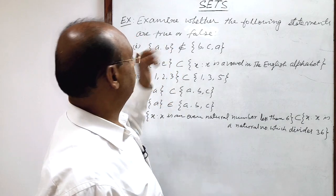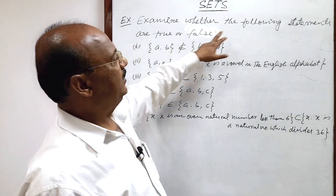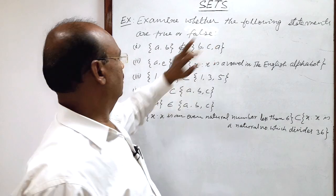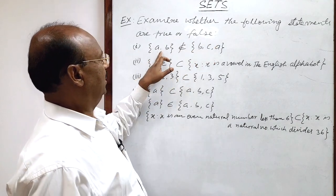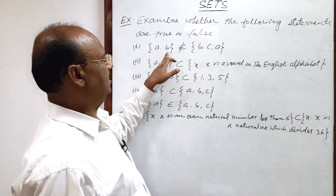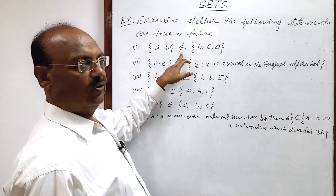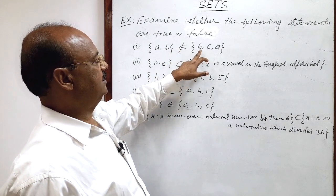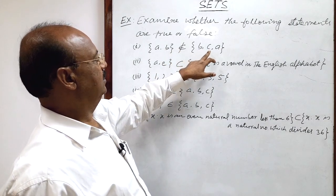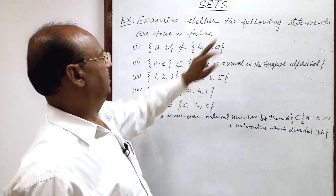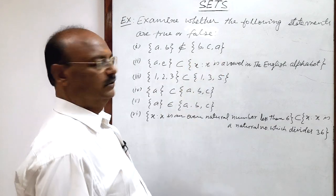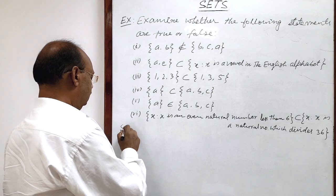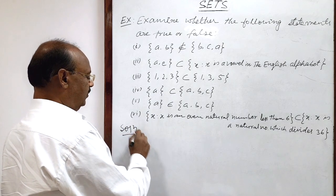So here the question is: examine whether the following statements are true or false. First, is the set {A, B} belonging to the set having elements B, C, and A? What is your opinion — whether it is true or false?